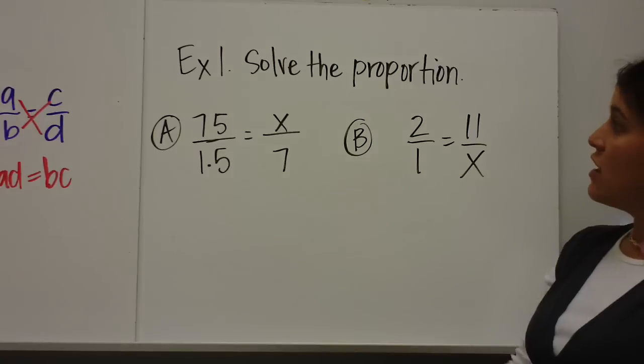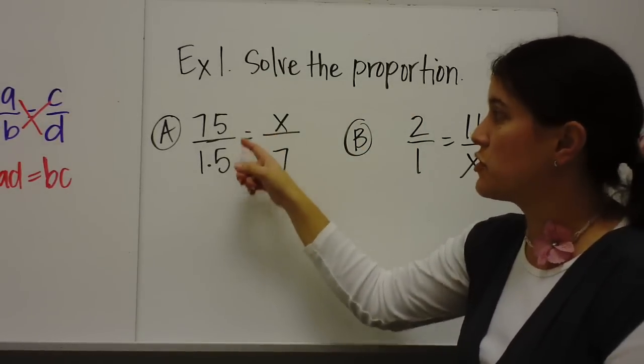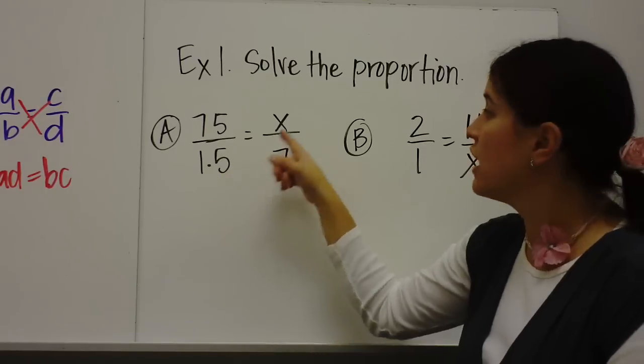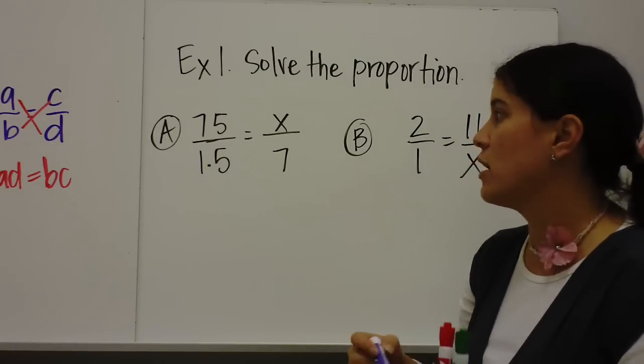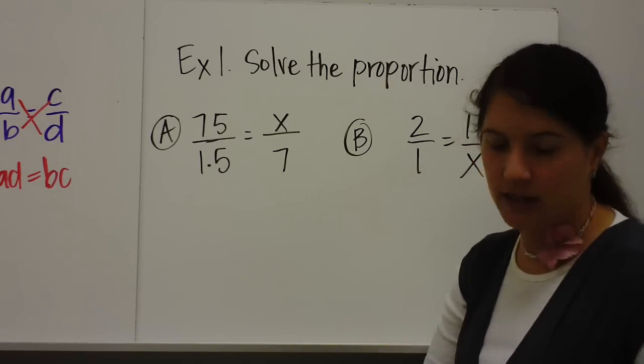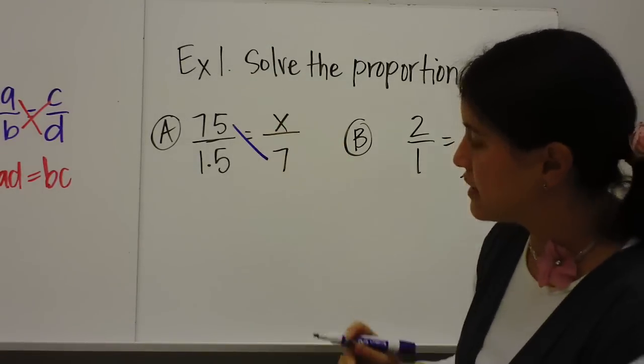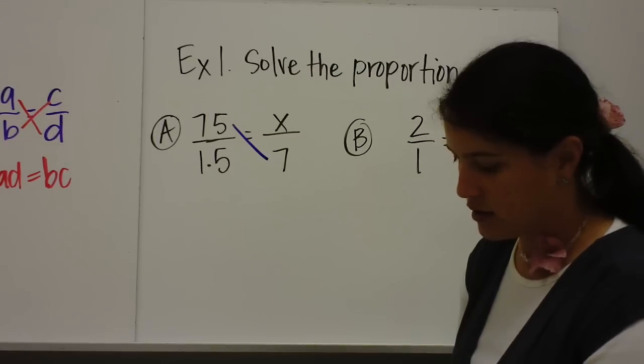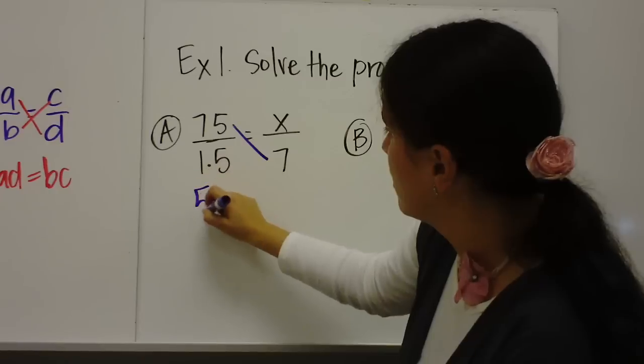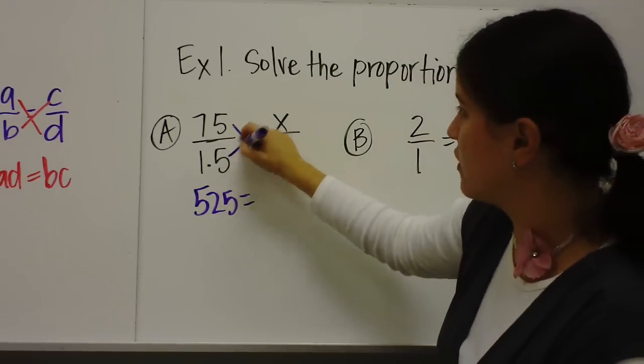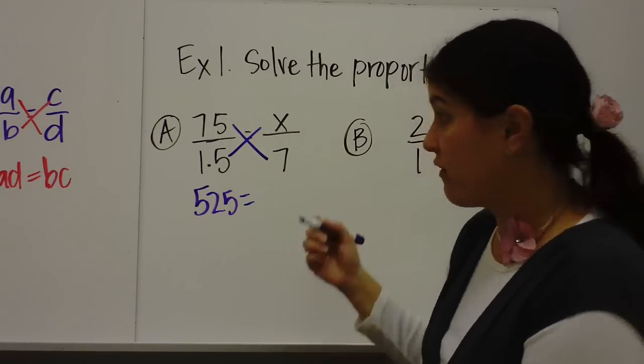Solve the proportion. So here's the proportion, 75 over 1.5 equals X over 7. I have two equal ratios and I want to solve for that missing ratio. So I'm going to use the cross product. We're going to do the cross product. 7 times 75, that's 525, and 1.5 times X. So what is 1.5 times X? 1.5X.